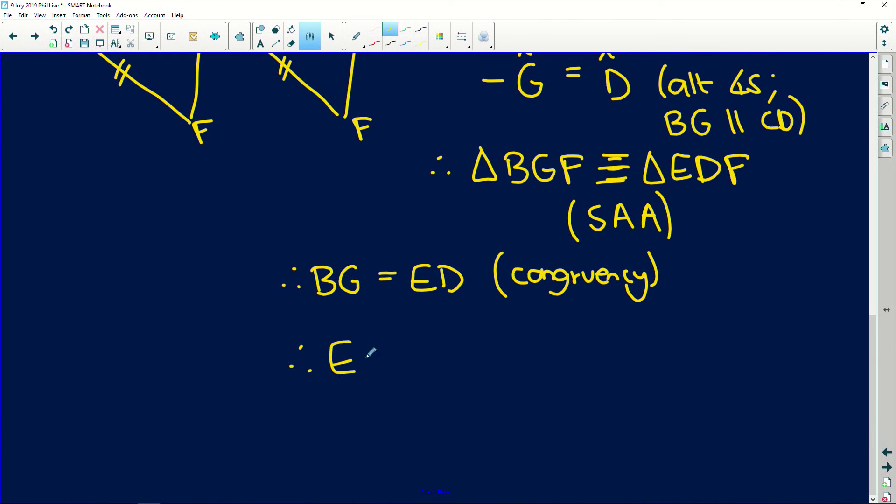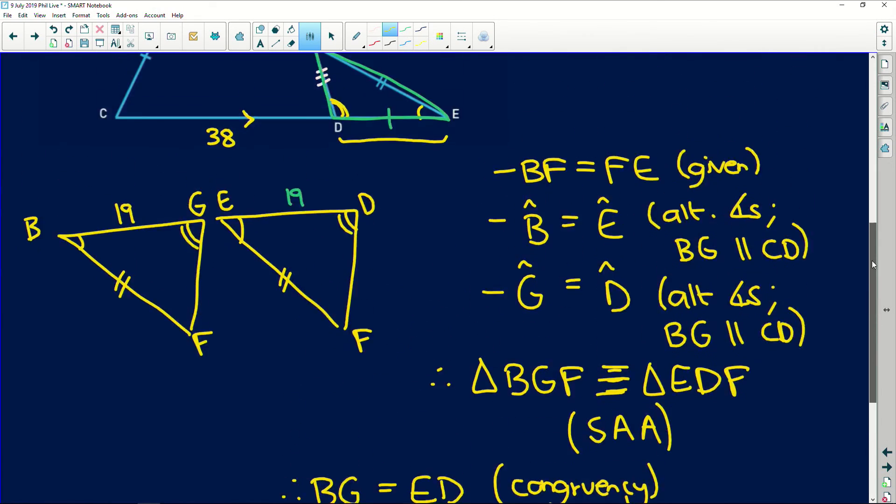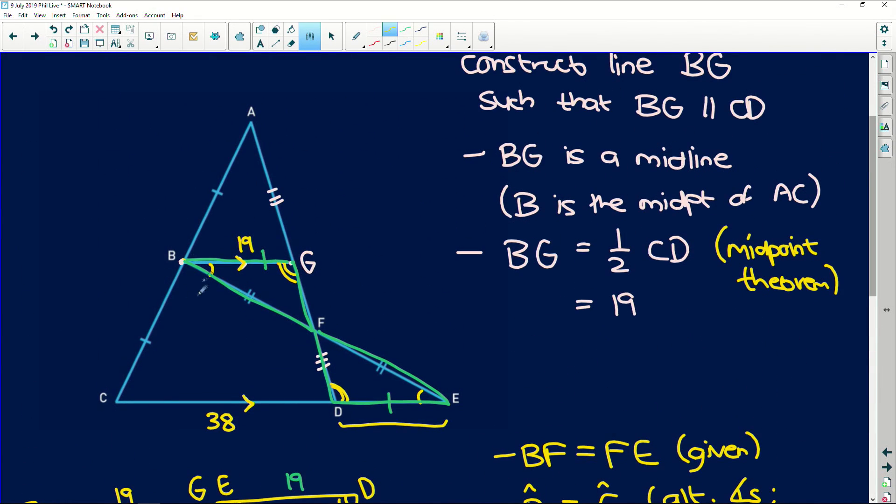Therefore, ED is equal to 19 units. So whenever you have a question like this, guys, just look here. The moment you get given a midpoint, if you have a situation where you have a midpoint and you don't have anything else to work with, but you have a length at the base here, say you get given a length of X. Always remember that you may be needing to construct a line there. If you construct a parallel line there, then you know automatically that because those two are parallel, remember, midpoint theorem says that this is therefore the midpoint of that side, and this side is equal to a half of the baseline that it is parallel to.